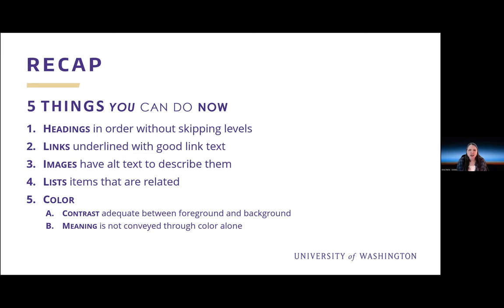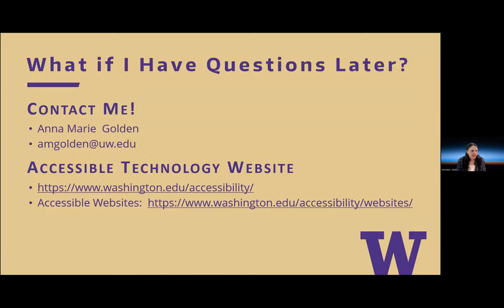For recapitulation, there are five things you can do now to make web content more accessible. One: make sure headings are in order without skipping levels. Two: underline links and provide link text that gives context to users about the purpose of the link. Three: add images with alt text to describe them. Four: use lists for items that are related. Five: ensure adequate color contrast and provide backups when using color to convey meaning. We also have great information on the Accessible Technology website, and my colleague will put the links in the chat for you.